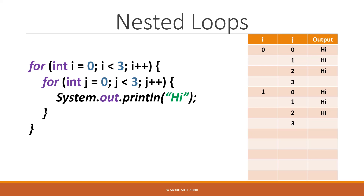We reach the closing bracket of the outer loop, but i is still less than three, so we increment i to two. We check if i is less than three — it is — so we step into the inner loop again, initializing j to zero. Since zero is less than three, we print "high" three more times. After the inner loop condition becomes false, we skip to the end, reach the outer loop's closing bracket, and increment i to three. Since three is not less than three, we don't step inside anymore and the program ends.